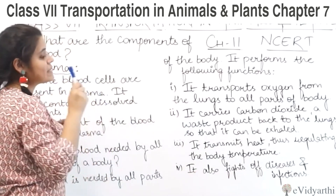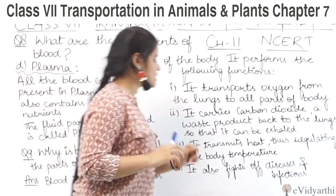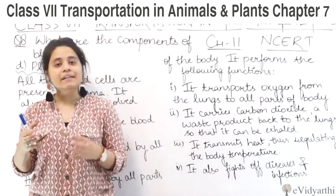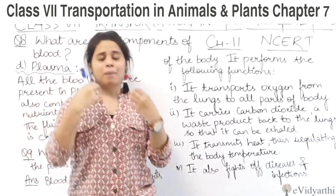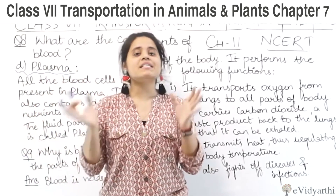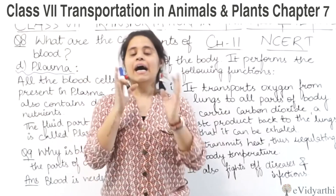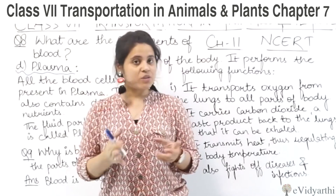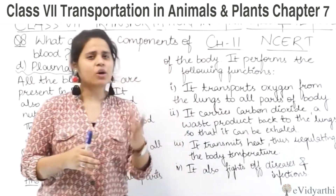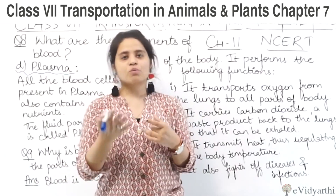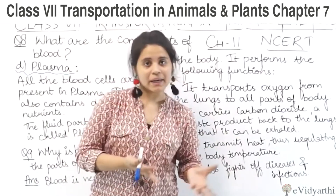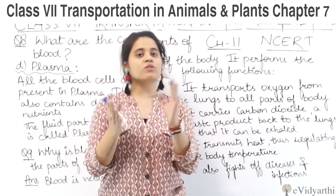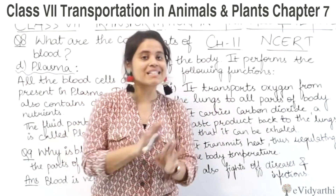Then, it transmits heat, thus regulating the body temperature. Transmits ka matlab hota hai to transfer or pass on. Blood ki wajah se hi body ka jo temperature hai, heat ko jo pass on karta hai, usi ki wajah se jo hamare body ka temperature maintained rehta hai. Agar blood ki ril kam ho ya kuch ho, toh hamare body mein yeh sab changes observe hone start ho jaenge — tabhi doctors kehte hain ki patient ka blood kam hai, isko glucose chadhao, blood chadhao.